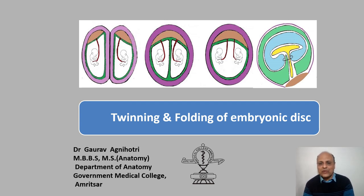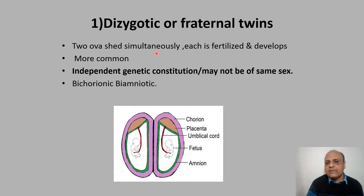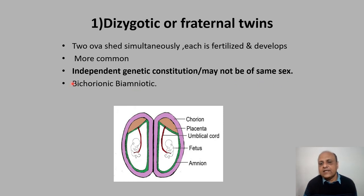Welcome to the class on twinning and folding of embryonic disc. What are twins? When two individuals are born at the same time. There are two scenarios: one is dizygotic or fraternal twins, and the other is monozygotic or maternal twins. Dizygotic twins occur when two ova are shed simultaneously, each fertilized by a spermatozoon and developing normally. Each fetus has an independent genetic constitution and they may not be of the same sex.